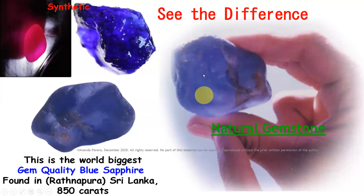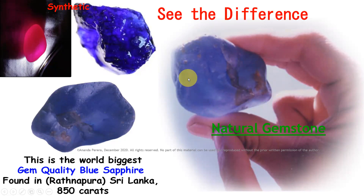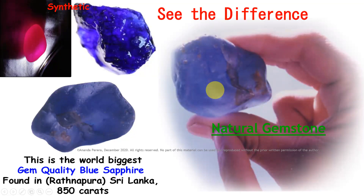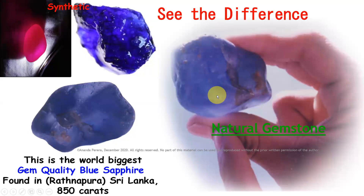Now look at this — this is an 850-carat world's biggest gem-quality sapphire rough stone. Both sides of the same stone are shown here. These are natural stones — the world's biggest gem-quality blue sapphire. Now compare with the synthetic blue sapphire and see the glowing difference. In these natural stones, pleochroism is present. But with the synthetic, when we rotate 360 degrees, the same color is given. Look at the synthetic ruby — it glows more than the natural. That is the main difference — we can recognize it with an experienced eye.